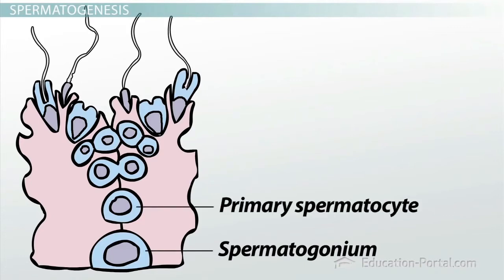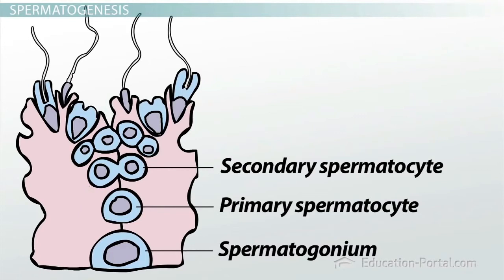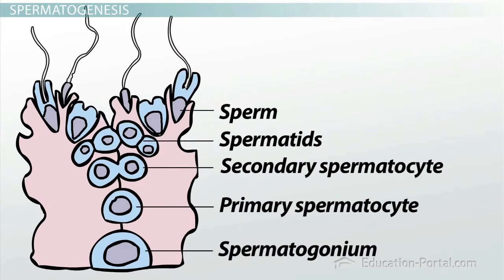And become a primary spermatocyte. As meiosis continues, the primary spermatocyte migrates away from the base of the Sertoli cells and divides to form two secondary spermatocytes. The two secondary spermatocytes continue migrating and then divide to form four haploid spermatids. After meiosis is complete and each spermatid has the correct number of chromosomes, they begin differentiating into fully functional sperm with their chromosomes packed tightly in the nucleus, an acrosome capping the nucleus, and a single flagellum to propel the sperm toward the ovum.